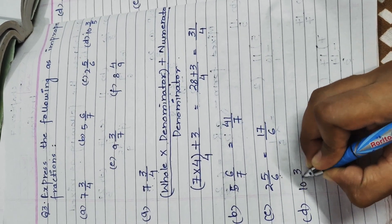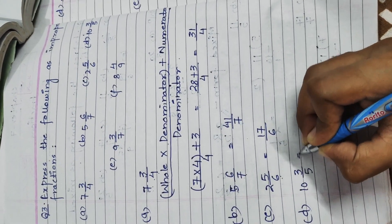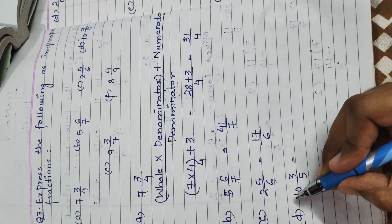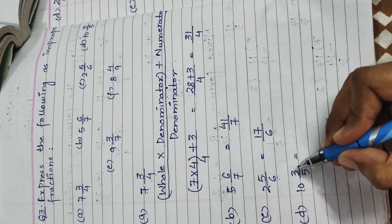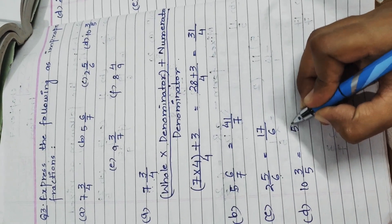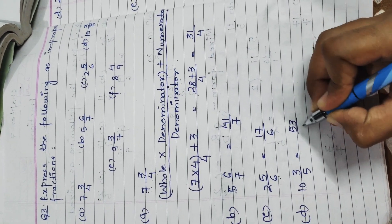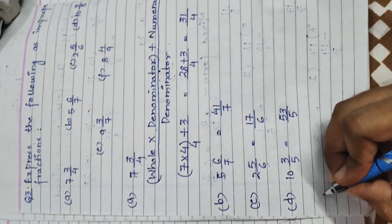Part D is 10 whole 3 upon 5. 10 × 5 = 50, and 50 + 3 = 53. The answer is 53 upon 5.